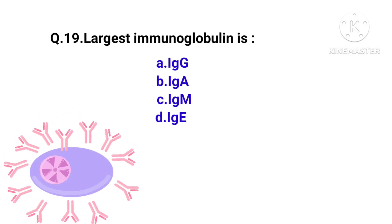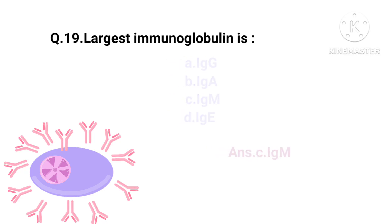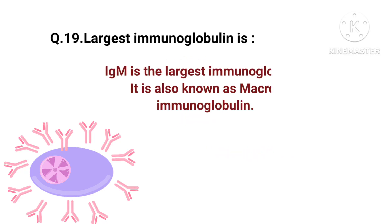The largest immunoglobulin is IgM. The options were IgG, IgA, IgM, or IgE. The right answer is option C — IgM. IgM is the largest immunoglobulin and is also known as macro immunoglobulin.